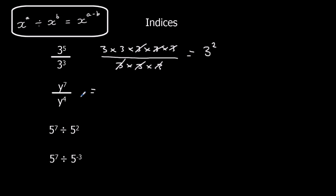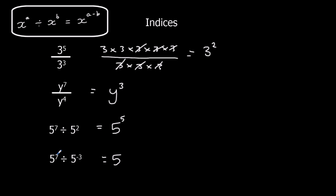Following the same rule, the base stays the same. 7 take away 4 gives 3. Another example: 5 to the power of 7 divided by 5 to the power of 2 — 7 take away 2 is 5, so it leaves us with 5 to the power of 5. The base stays the same. For the next one: 7 minus minus 3 — a minus minus makes a plus — so 7 plus 3 is 10.